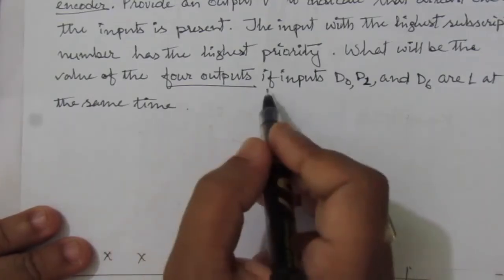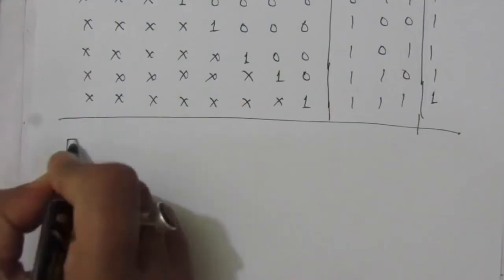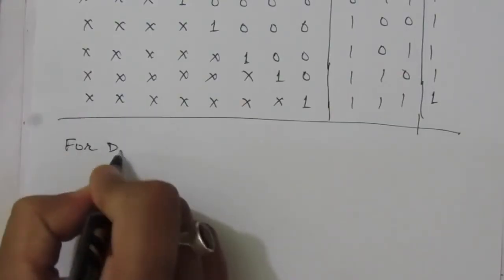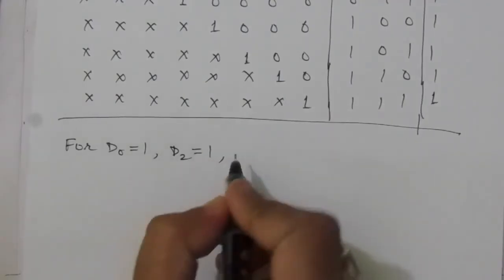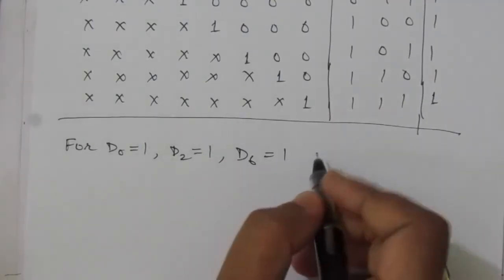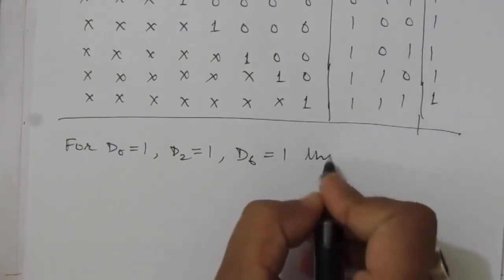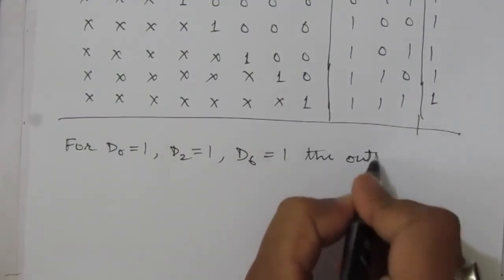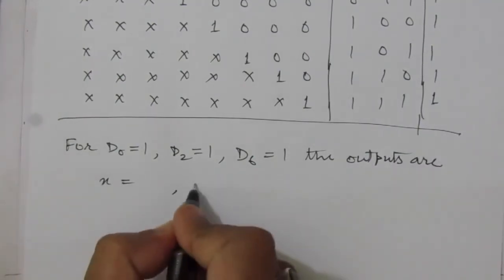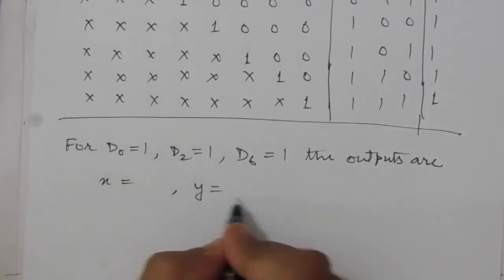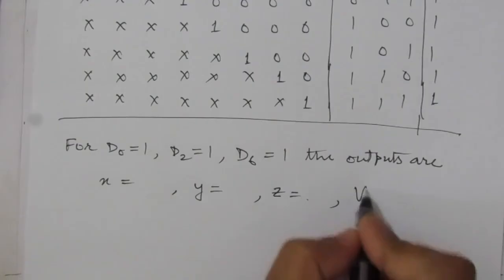The first part of the problem is complete. In the next part we have to find the four output values when d0 equals one, d2 equals one, and d6 equals one simultaneously.